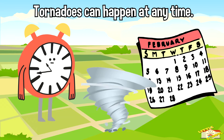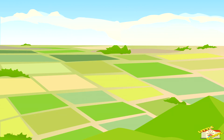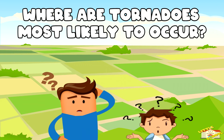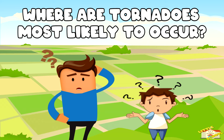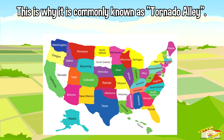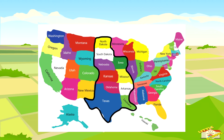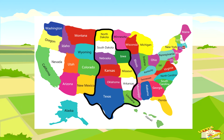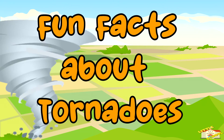Where are tornadoes most likely to occur? In the Great Plains, more than 500 tornadoes occur in this area. This is why it is commonly known as Tornado Alley. Texas, Oklahoma, Kansas, Nebraska, South Dakota, North Dakota, Iowa, Missouri, Arkansas, and Louisiana all make up Tornado Alley.